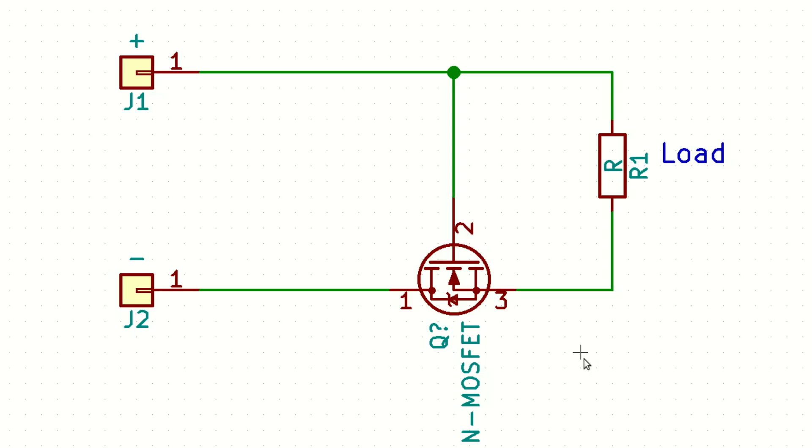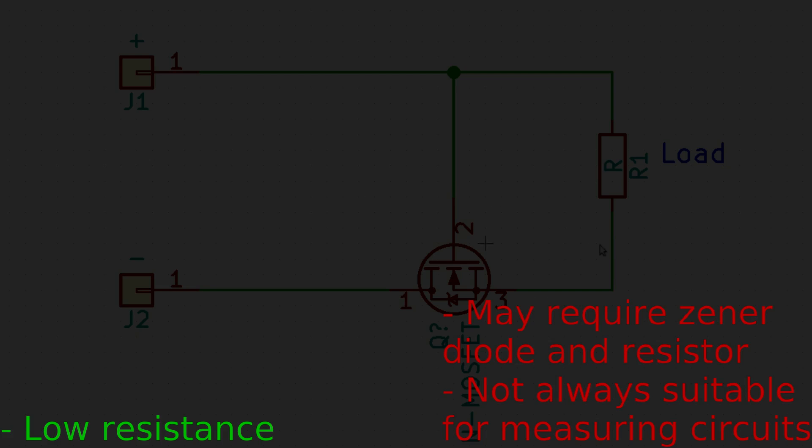The bad point is it might require Zener diode to clamp reverse voltage and it's not always suitable for measurement circuits which use ADCs or some other measurement circuits because it actually puts resistance in a ground path not all components like it. Also if we need common ground it might not be the best solution.